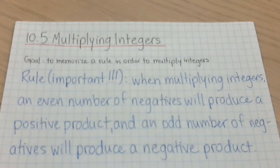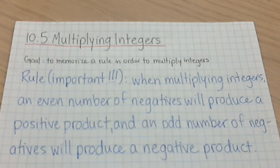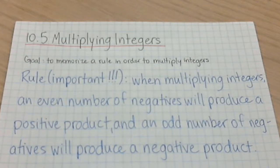When you multiply integers together, I'm going to get you to memorize a rule. When you multiply integers together, you need to look at the number of negative signs in the question. If there's an even number of negative signs, then your answer is going to be positive. If there's an odd number of negative signs, the answer's going to be negative.